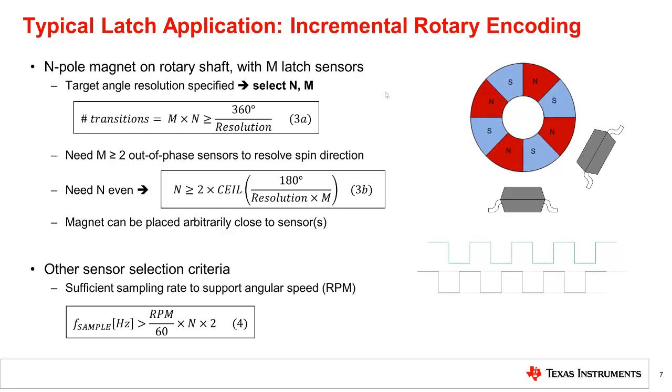The proximity of a magnet to the sensor is not critical as long as flux density amplitude at the sensor location exceeds the sensor's B-op max specification. Equations 3a, 3b, and 4 can be used to select the important design parameters.